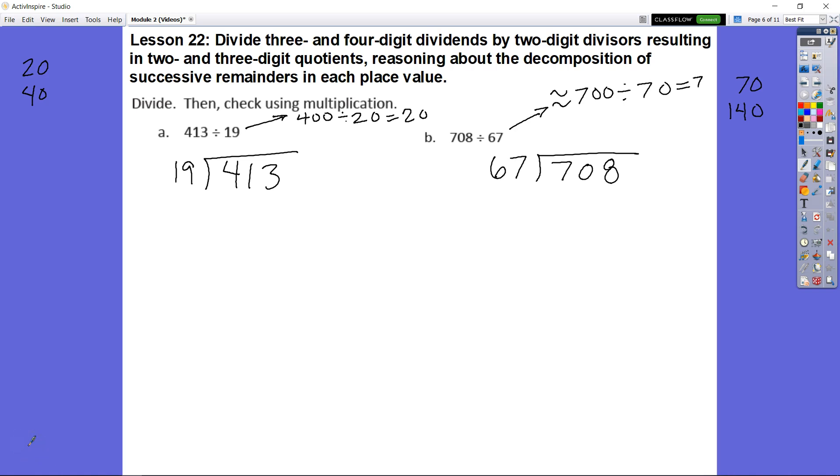Lesson 22, we're going to be dividing 3 and 4 digit dividends by 2 digit divisors resulting in 2 and 3 digit quotients. And we're going to reason about the decomposition of the successive remainders in each place value unit.